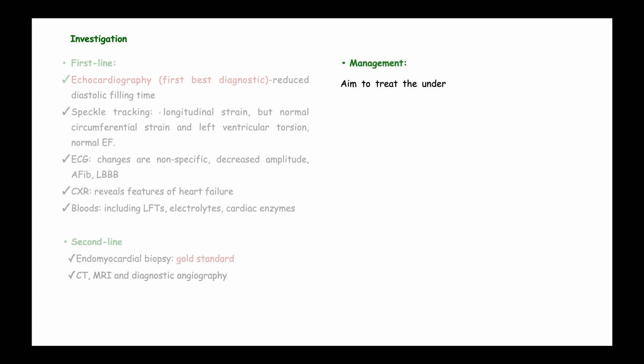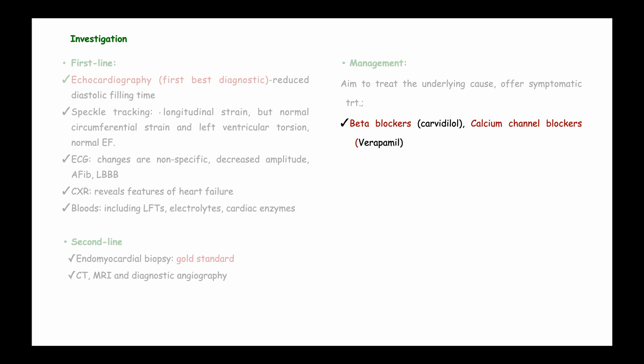Management aims to treat the underlying cause and provide symptomatic treatment. Beta blockers such as carvedilol are given to maintain sinus rhythm and help increase ejection fraction. Calcium channel blockers such as verapamil increase diastolic filling time and decrease sympathetic activity on the heart. ACE inhibitors such as lisinopril can be given, and diuretics such as furosemide are used to reduce the amount of fluid entering the heart and decrease its workload.